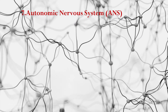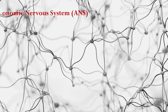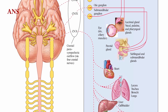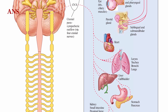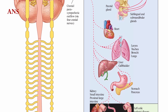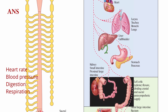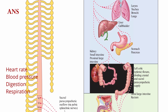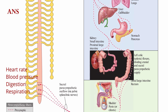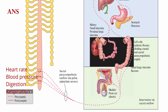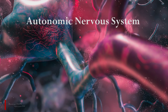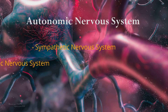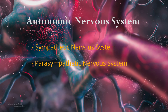The autonomic nervous system controls involuntary bodily functions such as heart rate, blood pressure, digestion, and respiration. It consists of two main branches: the sympathetic nervous system and the parasympathetic nervous system.